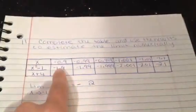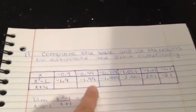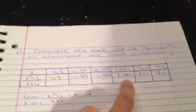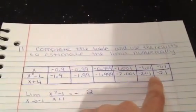As you see the pattern, we get negative 1.9, negative 1.99, negative 1.999, negative 2.001, negative 2.01, and negative 2.1.